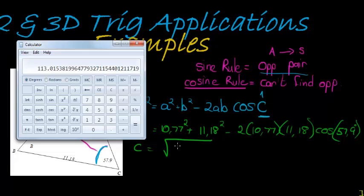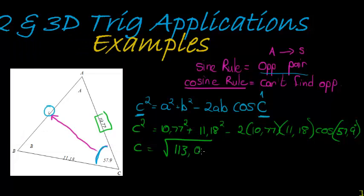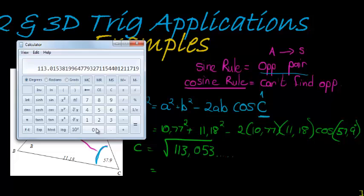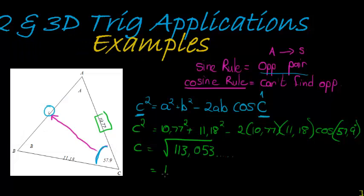There we go - there's my whole expression equal to 113.053, etc. Now we need to take the square root of that. I take the square root and I get 10.63. That is the length that I have here - 10.63.